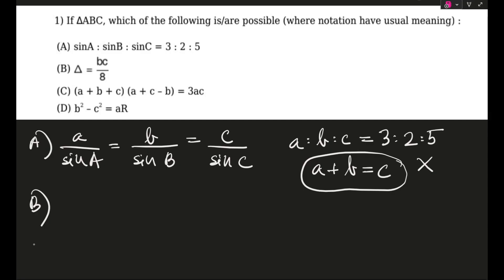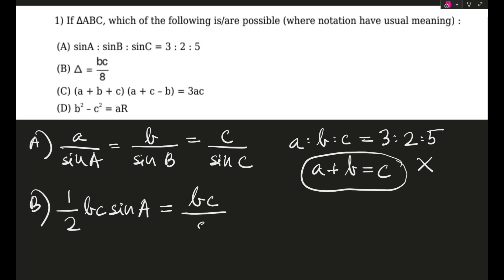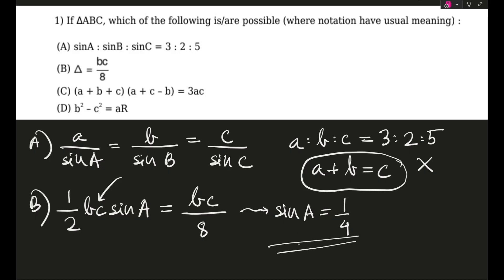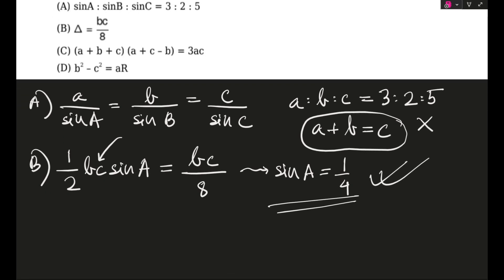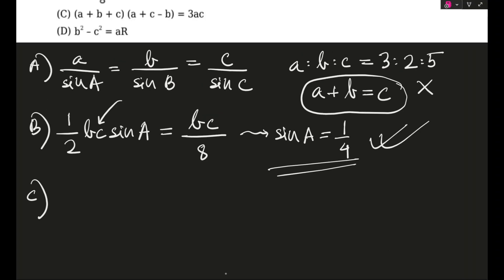Option B: Δ = bc/8, where Δ is the area of the triangle. Writing area as (1/2)bc sin A, then bc cancels and sin A = 1/4. Our job is to check whether this is possible — sin A = 1/4 is obviously achievable for some angle, so option B is correct.